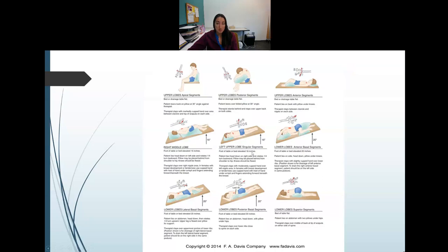Different positions target different lobes — it's important to understand which position corresponds to which lung segment. Visualize where the bronchioles are placed and determine which position points that segment downward toward the ground.